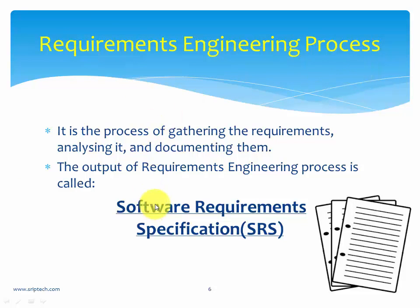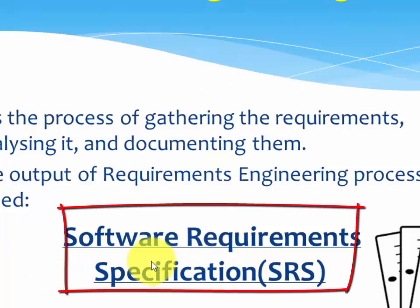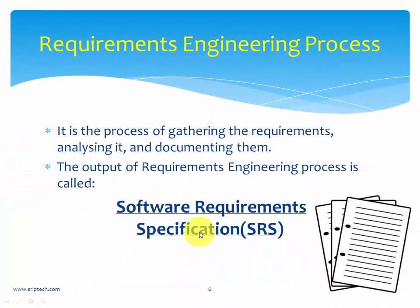The requirements engineering process is the process of gathering, analyzing, and documenting requirements. It consists of various stages, which we shall discuss in detail. Always remember that the output of this requirements engineering process is a solid document called the SRS — Software Requirements Specification. This document is the main reference used by the entire project team to develop an application. Whenever you have a doubt in the project, you go back and review the SRS.